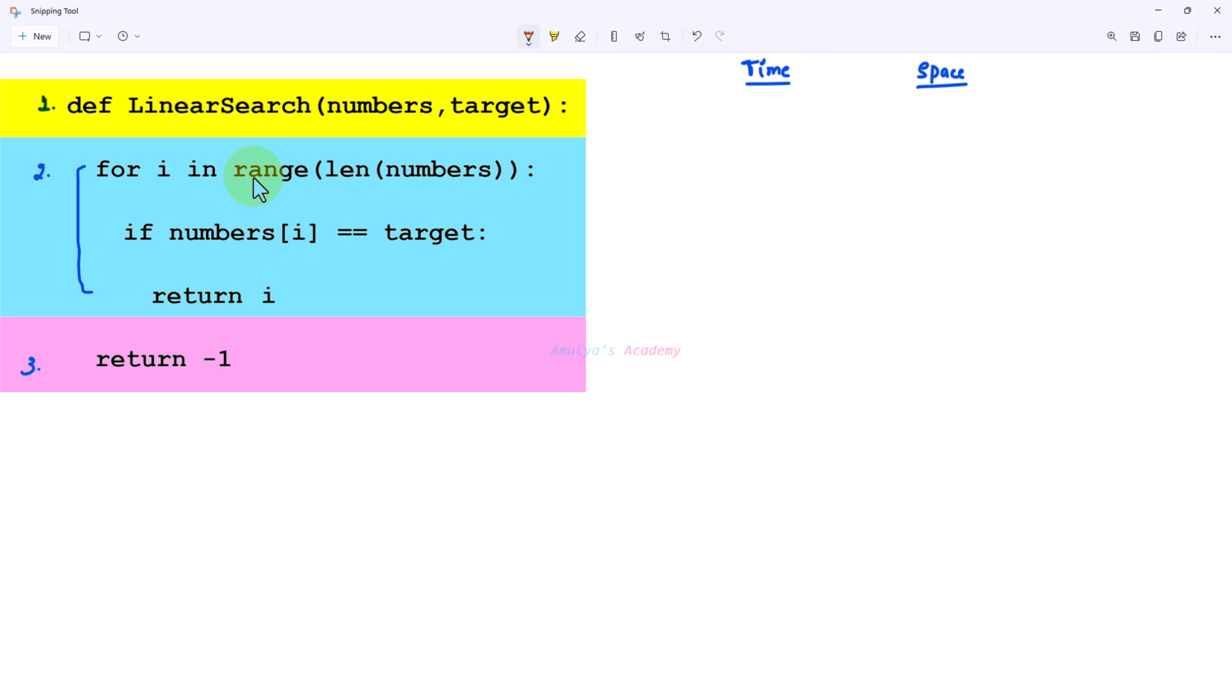First let's divide this function to different blocks. This is our first line, here def is a keyword, linear search is function name, numbers and targets are parameters, here numbers is a list and target is an integer value.